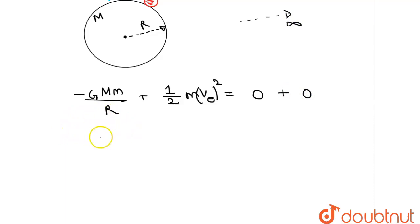So v_e: m and m will get cancelled, is equals to root over 2GM/R.